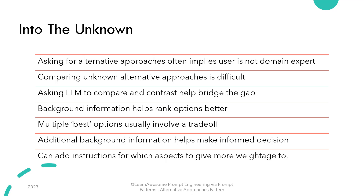Usually when a list of best alternatives exists, there is a trade-off involved, so having compare and contrast would help you make a more informed decision. You can intervene further by adding instructions that clarify what aspects you would like to weigh more towards — for example, cost, time, effort, maintenance, etc.